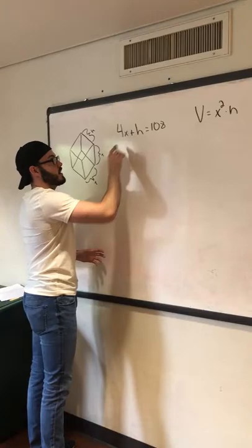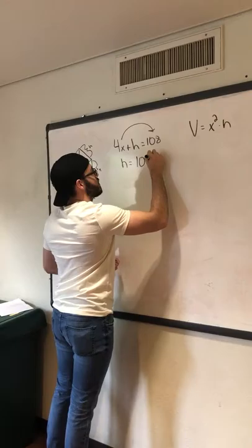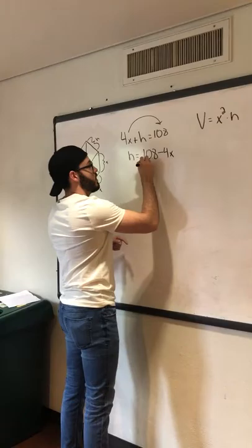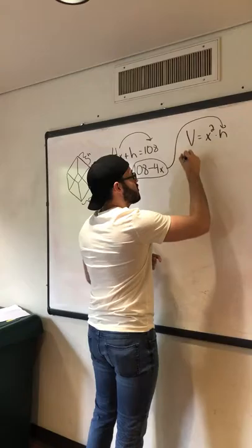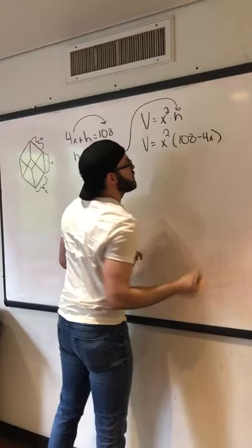The next thing we need to do is solve for H in terms of X, so we can get this whole equation in terms of X. So we move the 4X over to this side, so that H equals 108 minus 4X. So now we have V equals X squared times 108 minus 4X.